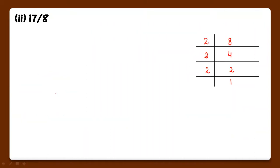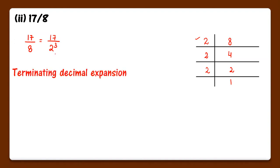Now second part: 17 upon 8. Again these are co-prime numbers — ye kisi common number se cut nahi ho raha hai. Now we will do the prime factorization of 8. So we can write 17 upon 2 raised to the power 3. Again denominator mein 2 ki powers hai, so it is a terminating decimal expansion.